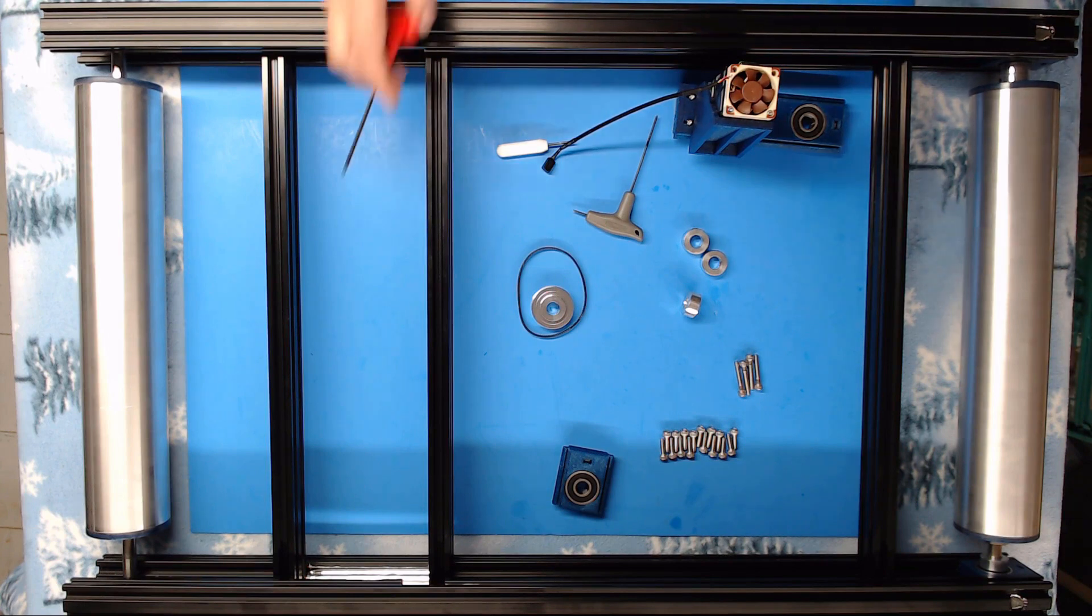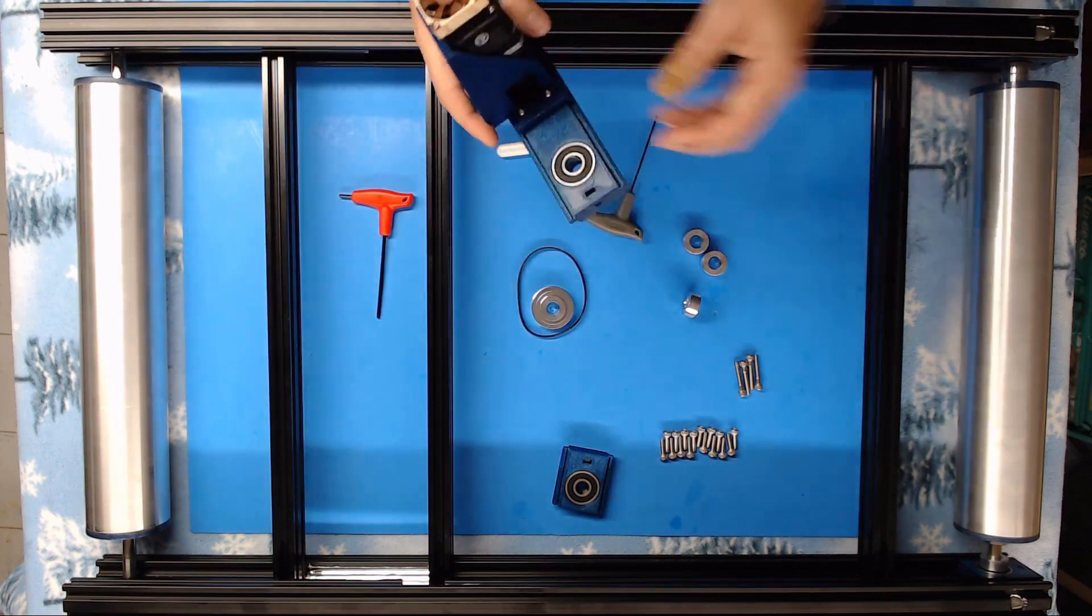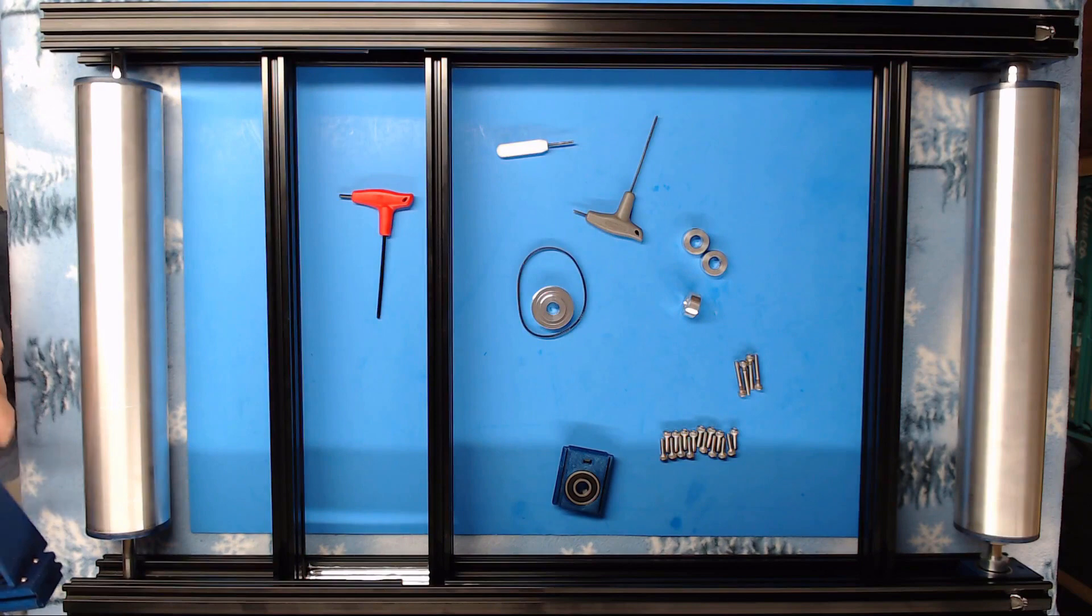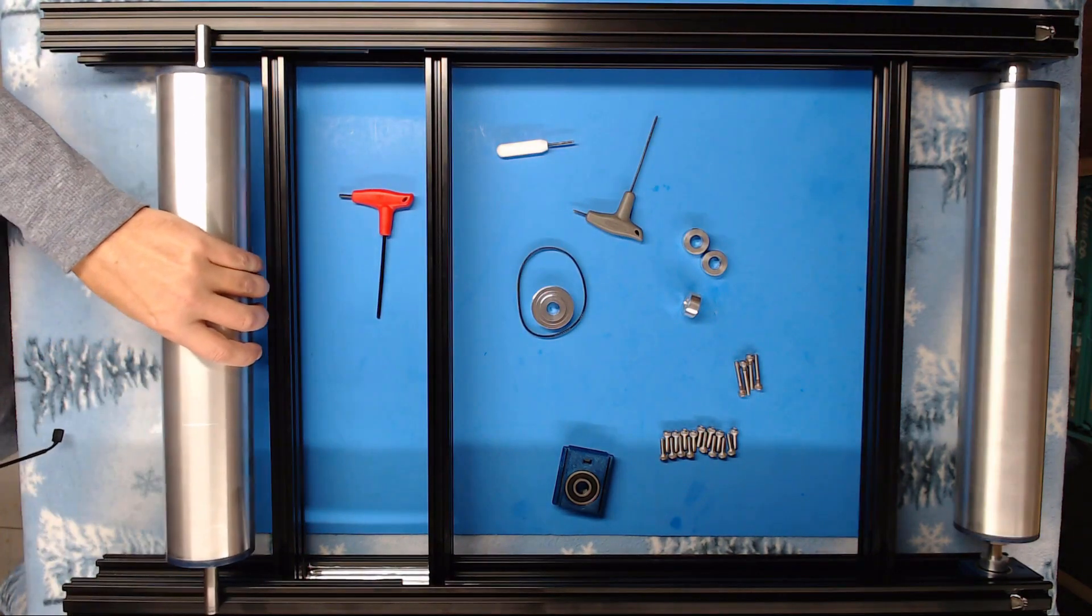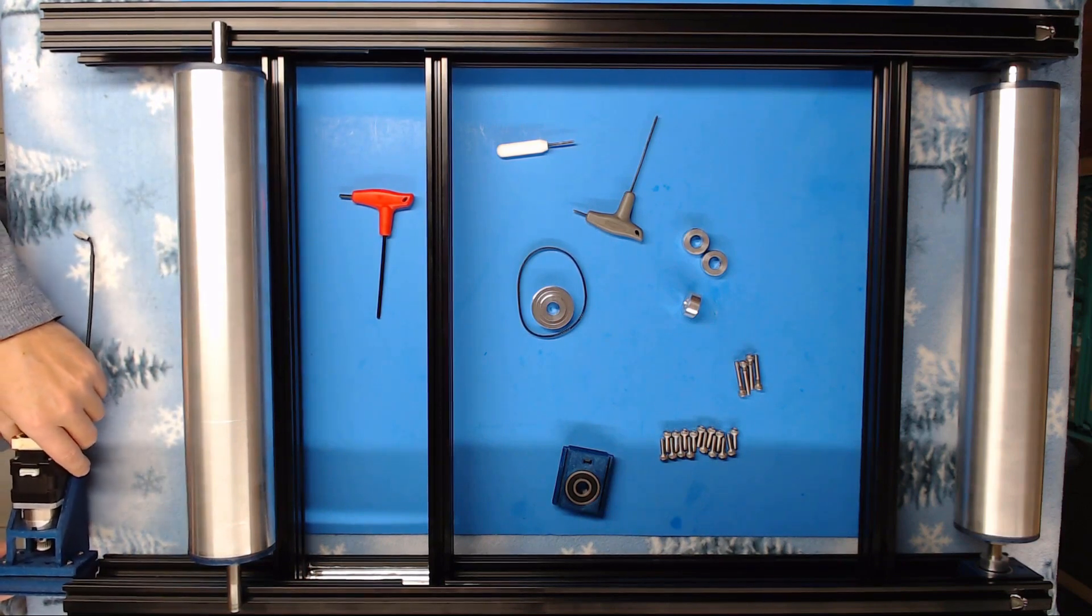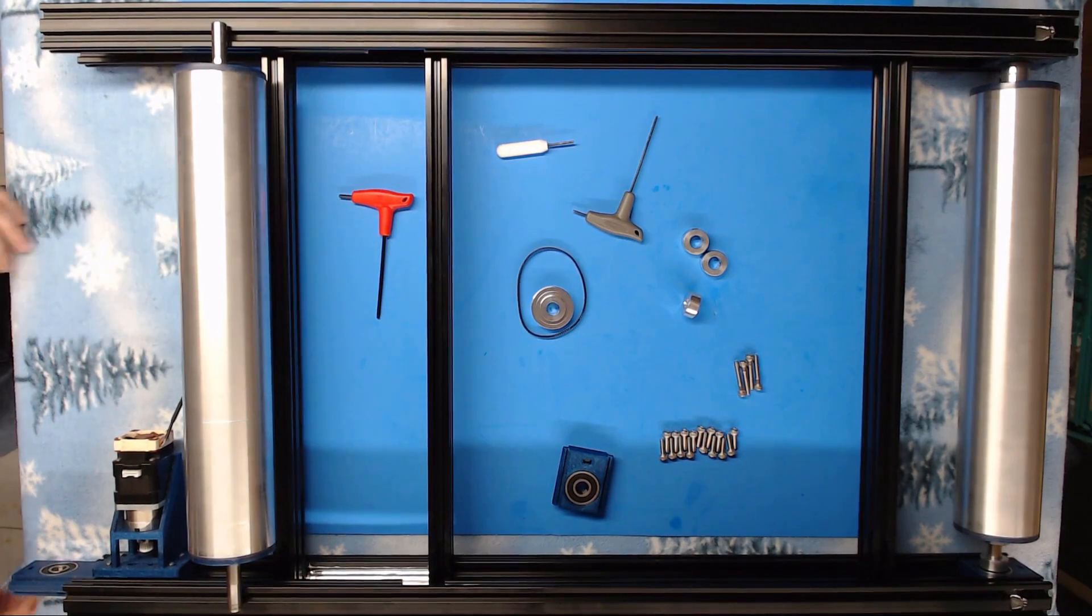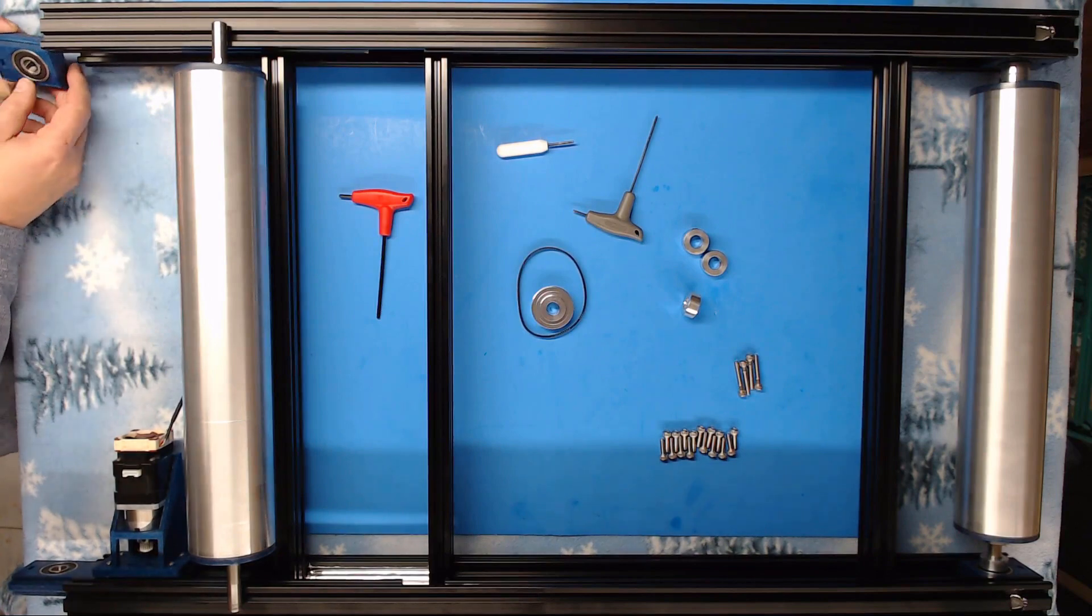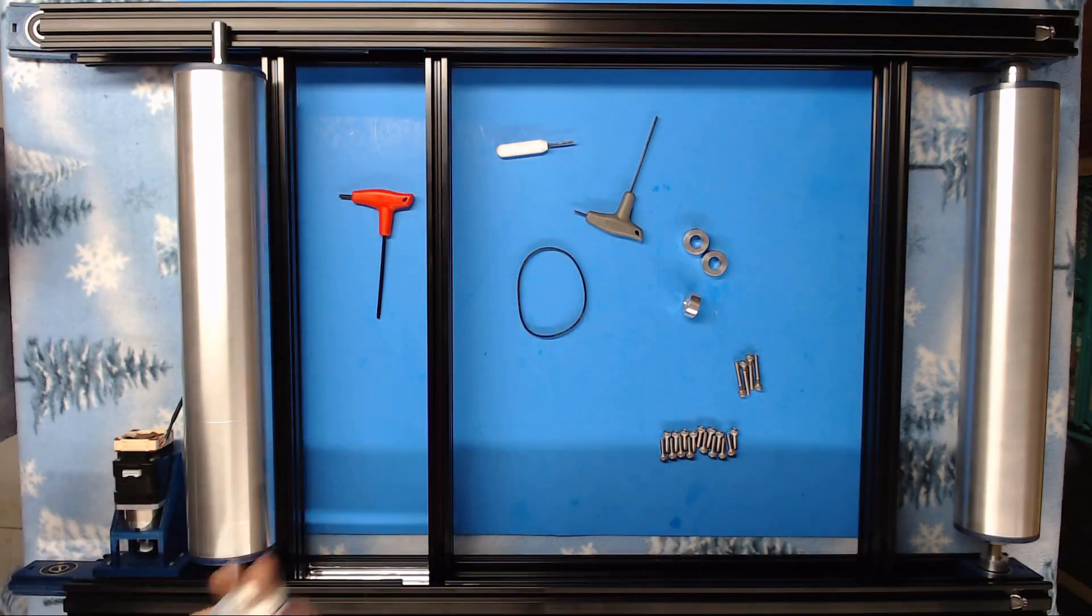Now we're going to do the same thing basically on the other end with a few minor differences. On this end we're going to start by mounting the stepper bearing mount first and you slide it part way in like so. And we can get our other bearing ready to go in.